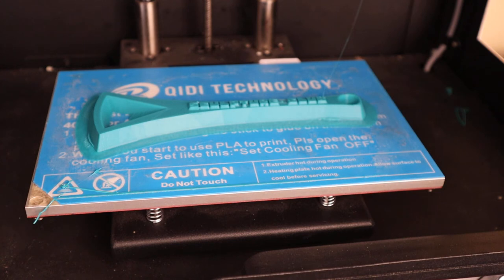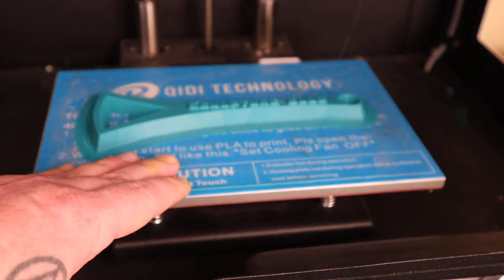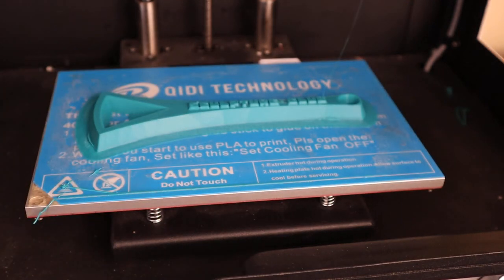If you need to lower the bed you can simply just push down on the bed until it lowers to where you can get your hands in there without bumping everything around.